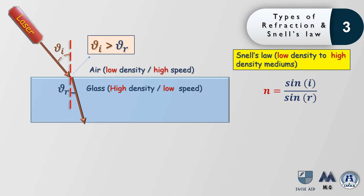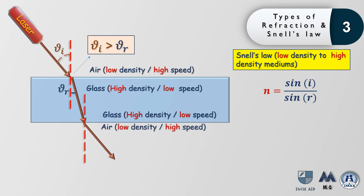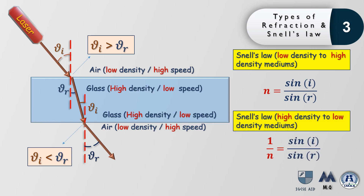Snell's Law can calculate the refractive index based on those angles. The law states that the refractive index n equals sine i over sine r, where i is the angle of incidence and r is the angle of refraction. The second type of refraction is when the light ray travels from a high density medium to a low density medium, such as from glass to air. In this case the refracted angle is greater than the incidence angle, and Snell's Law becomes: 1 over n equals sine i over sine r.